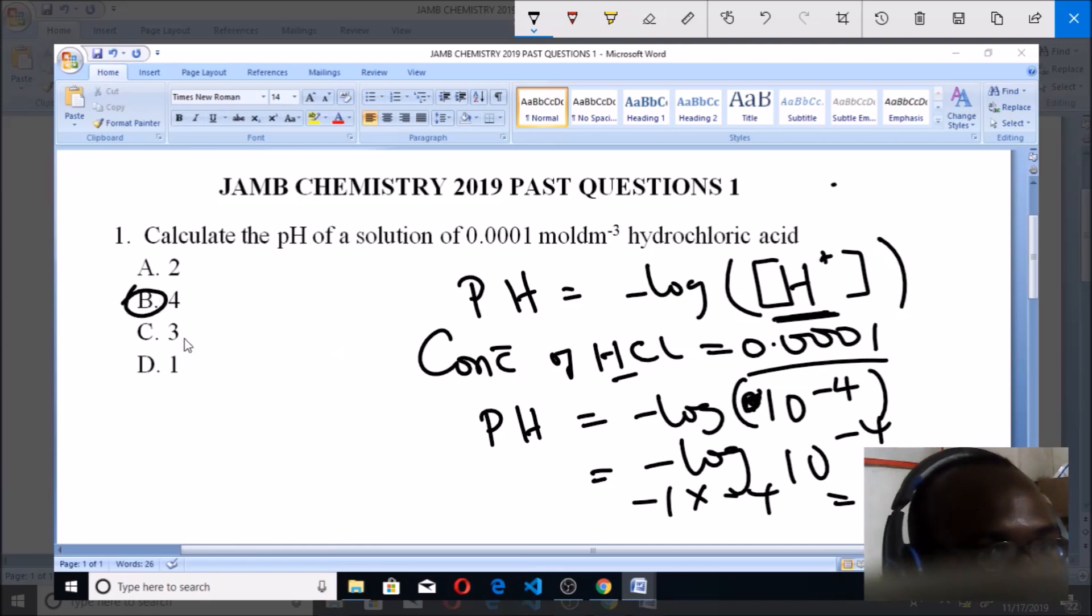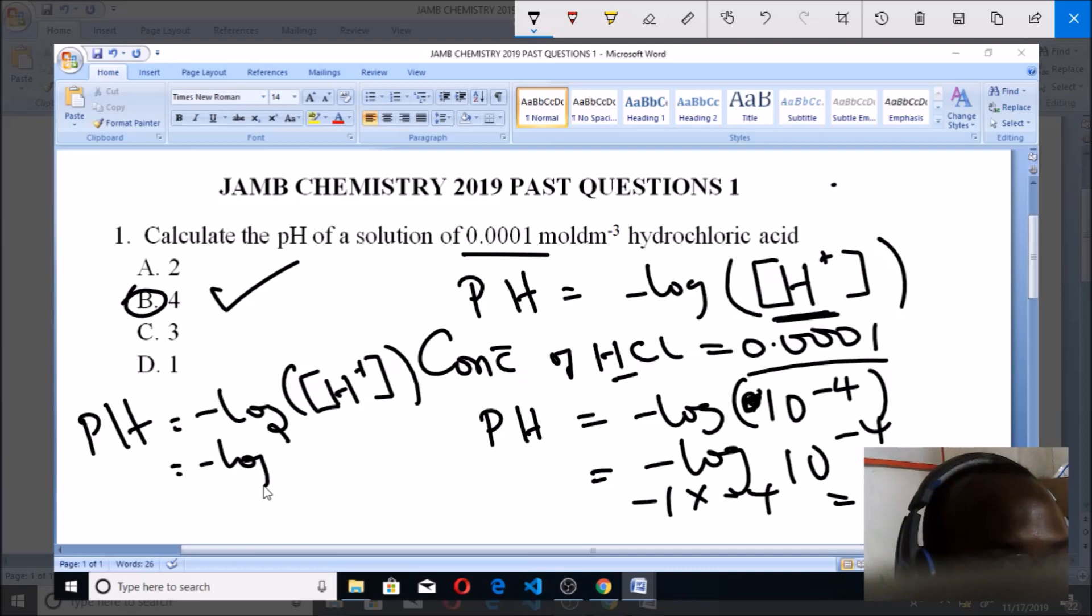The concentration is one times 10 to power minus 4, so this is the same as negative log, in brackets, one times 10 to power minus 4. One times 10 is still the same thing as 10 to power minus 4, so this is log of 10 to power minus 4. You have to put minus because you are taking this negative log. So minus four coming over here and meeting this other minus will make it plus four. So the answer is plus 4.